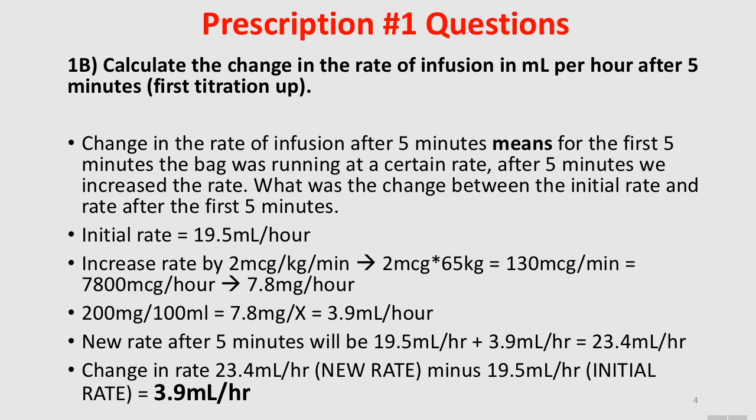Next question: calculate the change in the rate of infusion in mL per hour after 5 minutes — that is, after the first titration. For the first 5 minutes the bag was running at a certain rate, which we found in the previous question. After 5 minutes — literally 1 second after — we increase the rate. The question asks: what was the change between the initial rate during the first 5 minutes and this new increased rate?